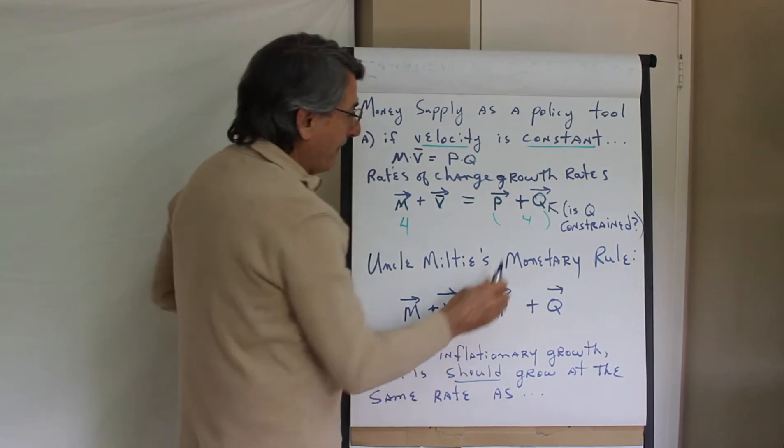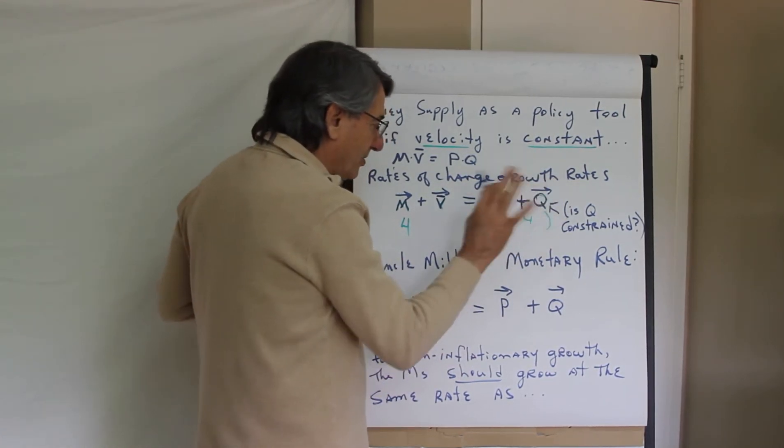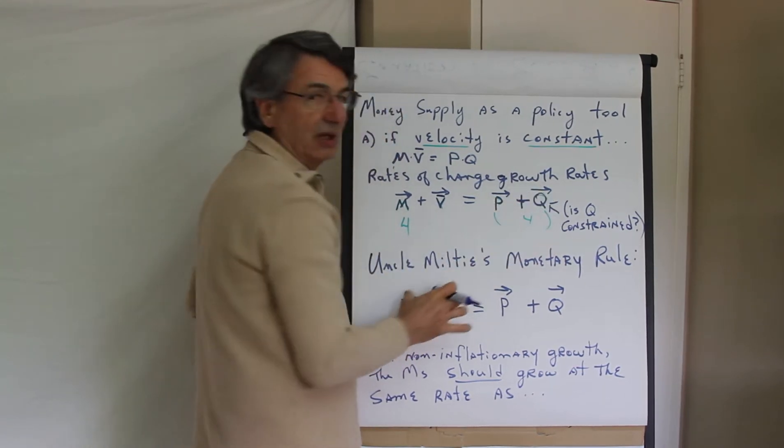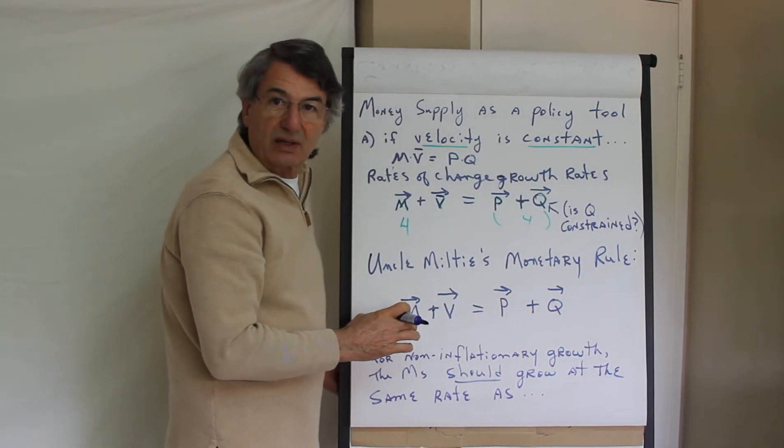When it comes to nominal GDP, it could be either the price level that's growing 4% and quantity is not changing, or it could be that quantity grows 4% and price doesn't change. Or it could be 2 and 2. It doesn't matter, it could be some proportion. But the point is that it's changing nominal GDP, not necessarily real GDP.